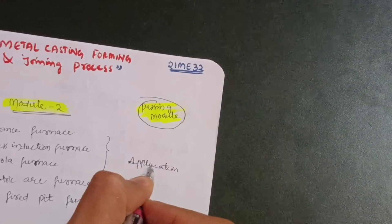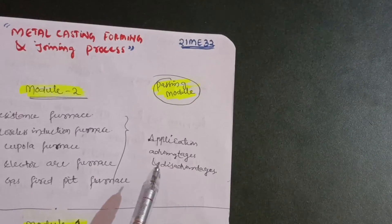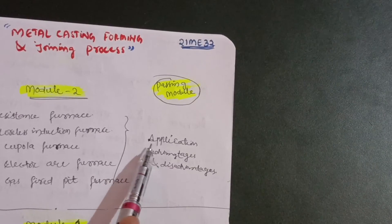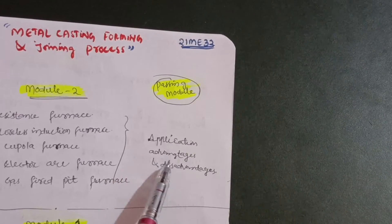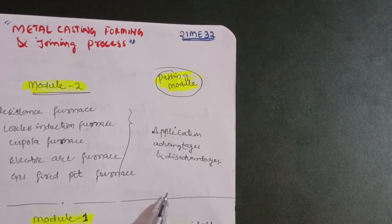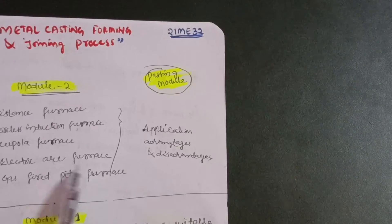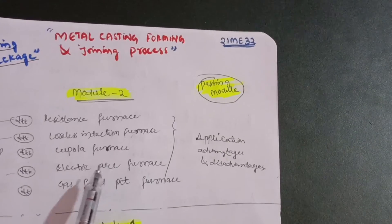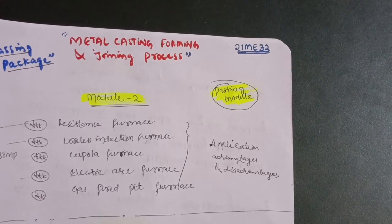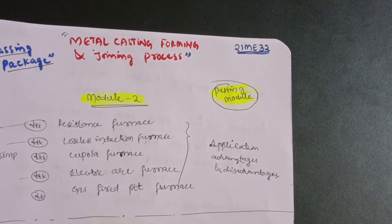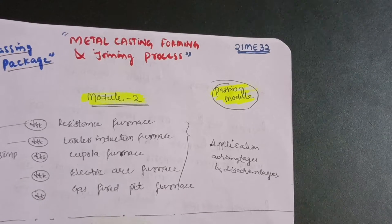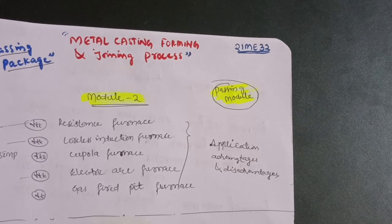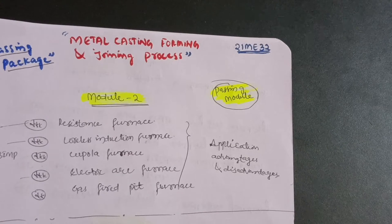You have to remember the application, advantages, and disadvantages parts as they may ask these in the examination. These are the five questions to cover in Module 2. As you know, there are two to three chapters — sometimes even four chapters — in each module, but I have taken only the important questions from the particular module and chapter.